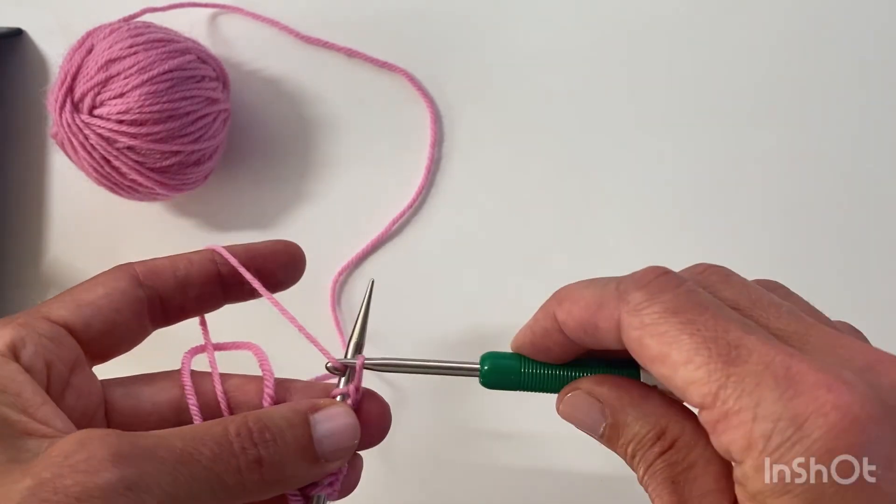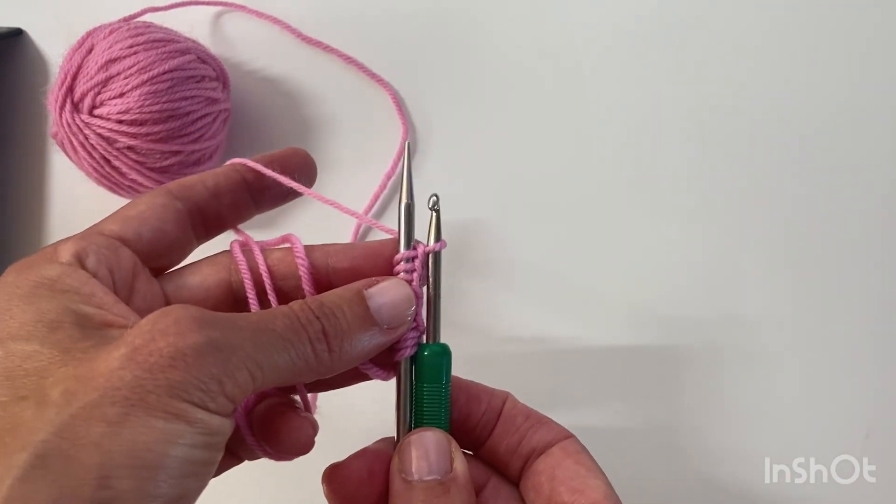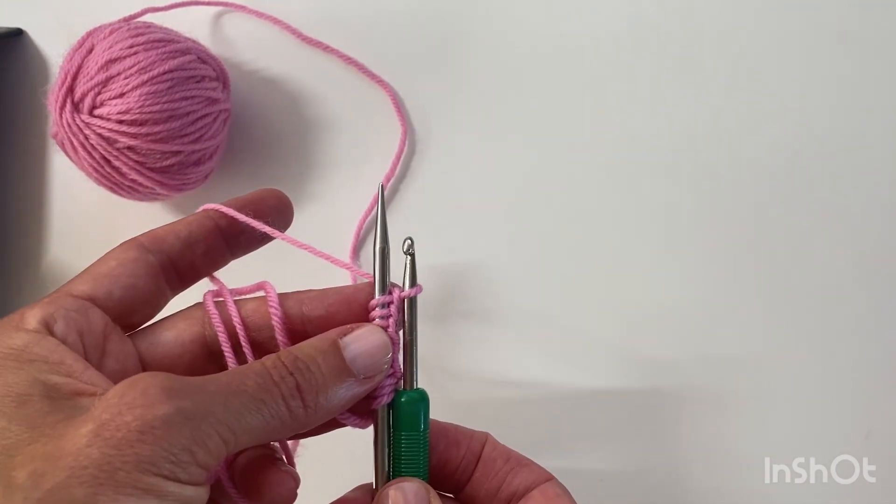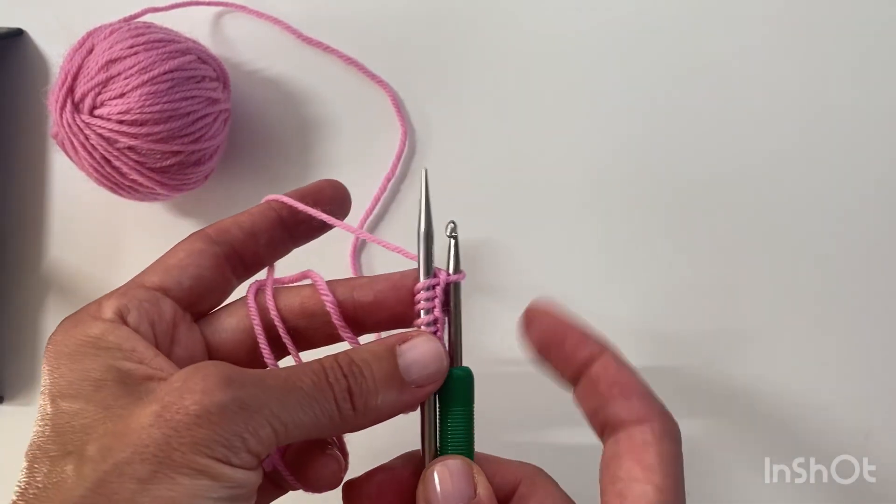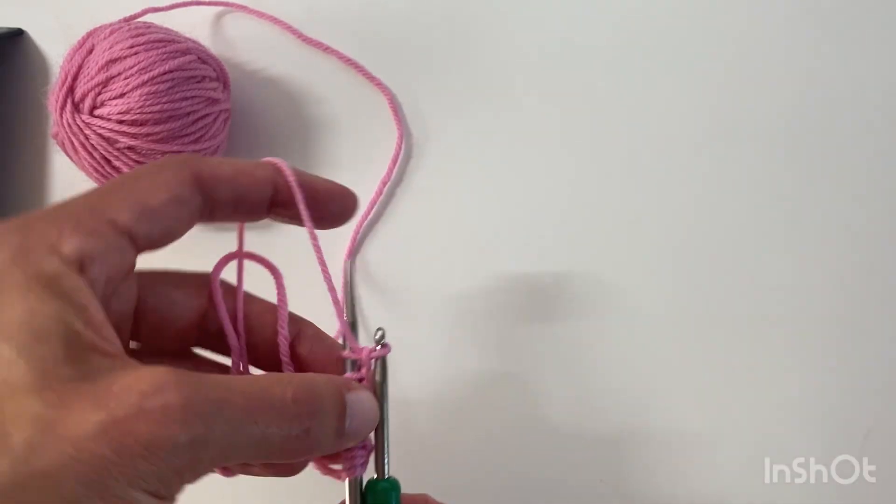So I've got 10 now, but what I often do, because when you come back to undo this, it's helpful to know which end you unravel from, and you're going to be unraveling from this end. So I always do say three more.